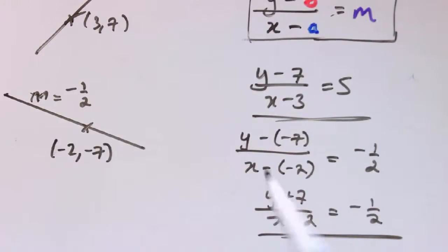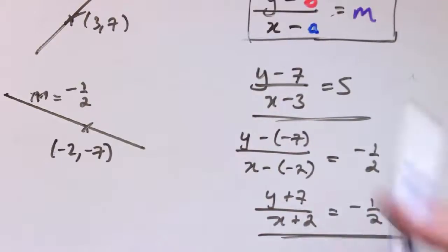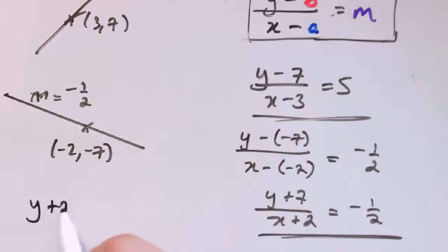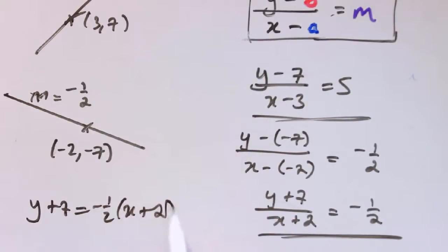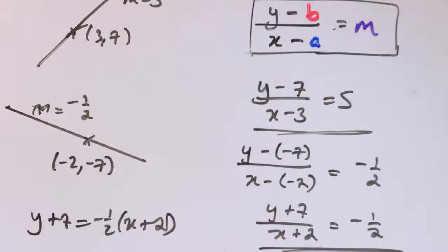Once you get the hang of this, it's nice and simple. You can either write it straight in the point-slope form, or go straight to y plus 7 equals minus one-half times (x plus 2). A really important skill going into further maths and A-level is being flexible and fluent with interchanging between all these different forms of straight lines, because linear relationships, though the simplest in maths, are among the most important and widely used.